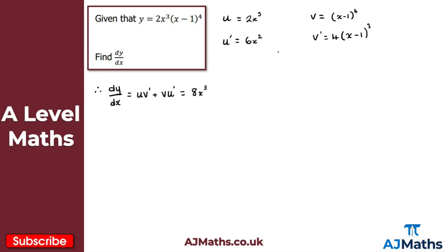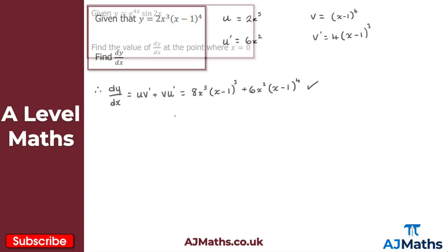We get 8x cubed·(x minus 1)³, and then we also have v·u prime: (x minus 1) to the power of 4 multiplied by 6x squared, giving 6x squared·(x minus 1)⁴. That's our solution — you could do further work factorizing, but we're not asked to express it in a certain form, so we leave it there.